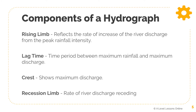Now let's look at the components of a hydrograph — these are important and required knowledge. First, we have the rising limb. The rising limb reflects the rate of increase of river discharge from the peak rainfall intensity. Basically, when there is a peak in rainfall, the rising limb starts, and we measure how fast and how steep this rising limb is due to the amount of rainfall present.